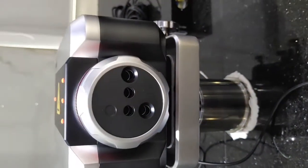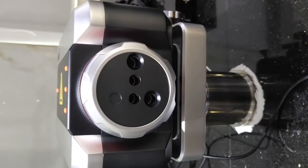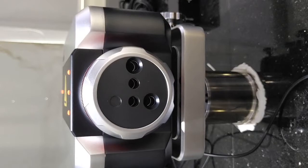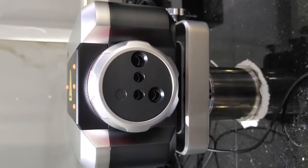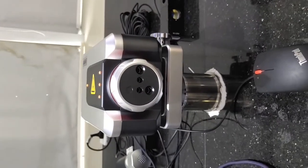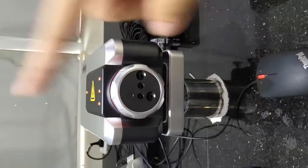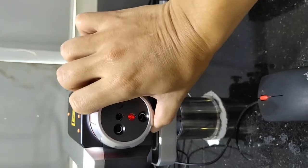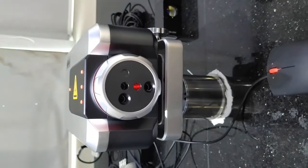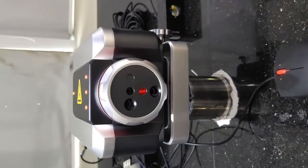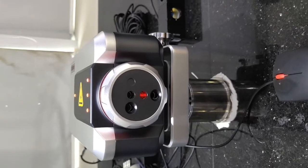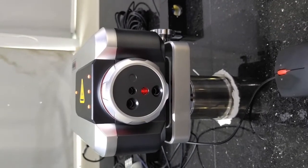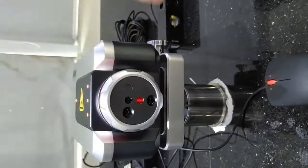When we change to this status, it is used to measure the straightness in this direction. When in this status, we measure straightness in this direction.